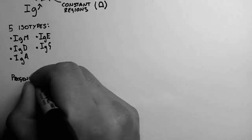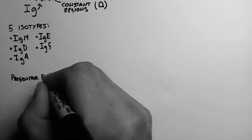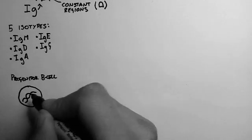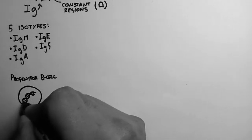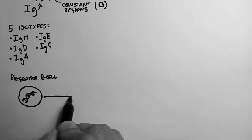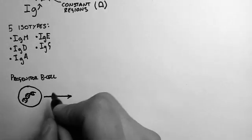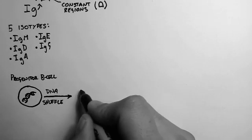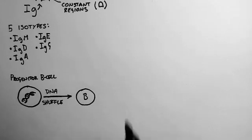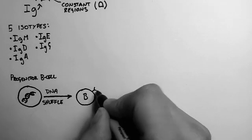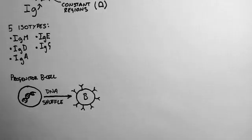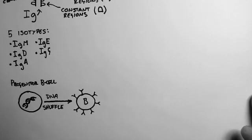So what basically happens is that a progenitor B cell, which will give rise to a B cell, has a bunch of DNA inside it for making these antibodies. Now to get some variability, it shuffles up the DNA before becoming a B cell. So each B cell will have different antibodies, and these are pretty random. But remember that one B cell will produce only one type of antibody.